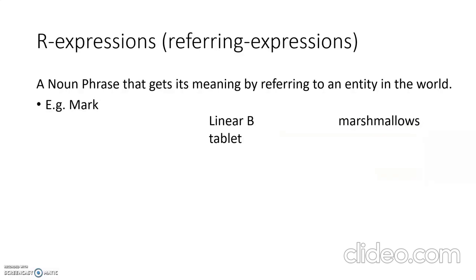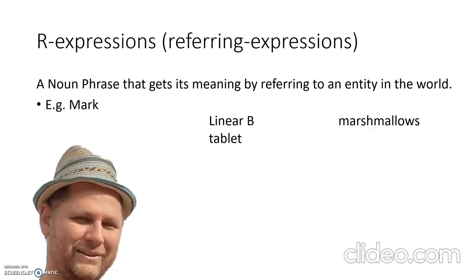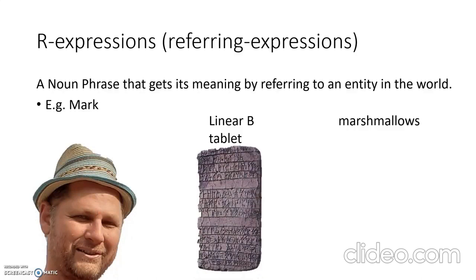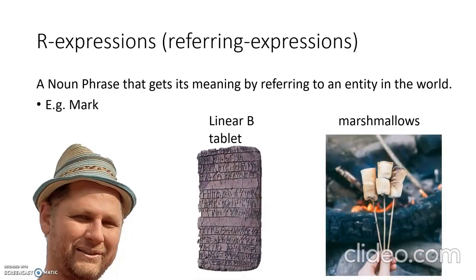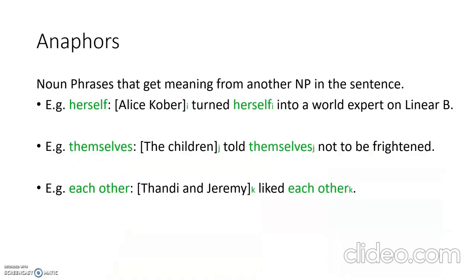Going back to those three types of noun phrases: the first one is called R-expressions, where R stands for referring. R-expressions are noun phrases that get their meaning by referring to an entity in the world — examples include Mark, Linear B tablet, or marshmallows. Next, we have anaphors, and these are noun phrases that get meaning from another noun phrase in the sentence — for example, herself, themselves, each other, or himself.